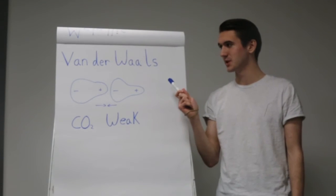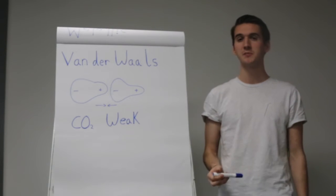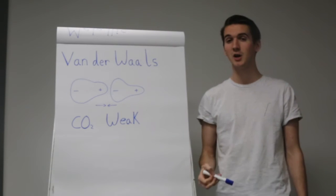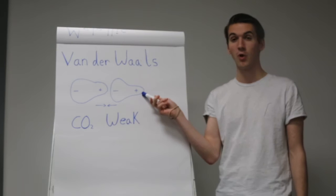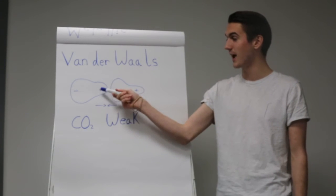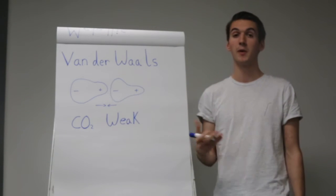Finally, we have van der Waals interactions. These happen between molecules or atoms, where there's a redistribution of charge, forming a dipole across the molecule or atom. We get a positive and a negative end, and these are attracted to each other, forming a bond.